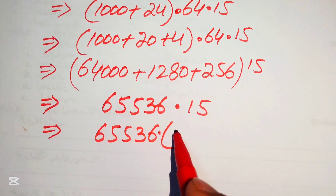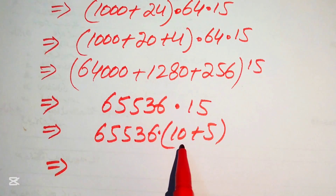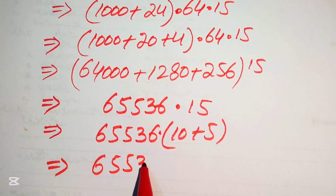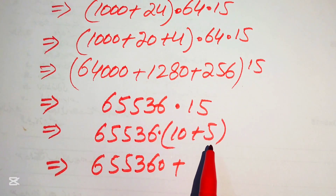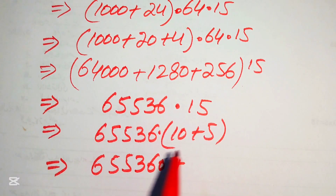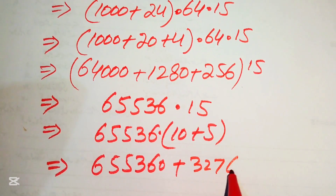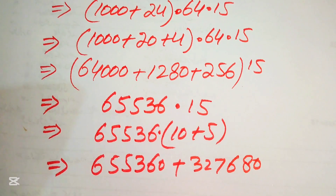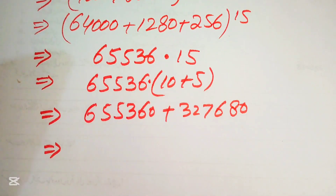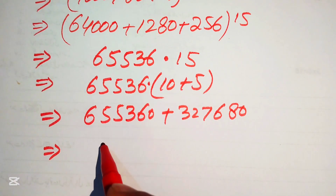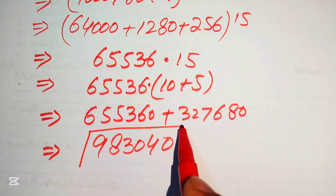Multiplying: 65,536 times 10 gives 655,360, and 65,536 times 5 gives 327,680. Adding these two values gives the final answer: 983,040. This is the required simplification of the given expression.